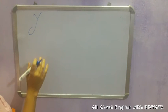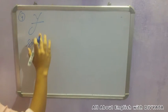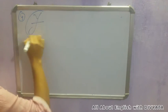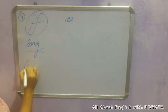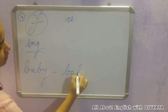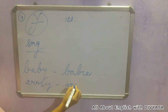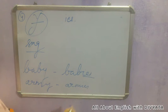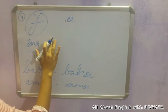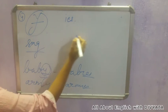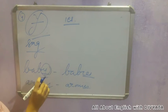The fourth rule applies when a singular noun ends in 'y'. We remove the 'y' and add 'ies' at the end. For example, baby becomes babies, and army becomes armies. So I removed the consonant 'y' and added 'ies'. This is how we form the plural from singular nouns ending in 'y'.